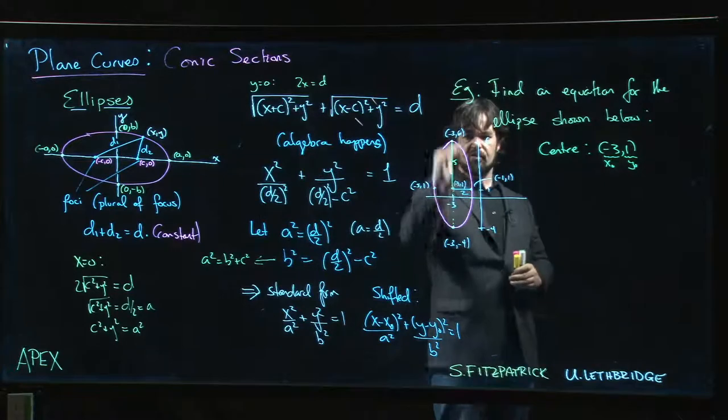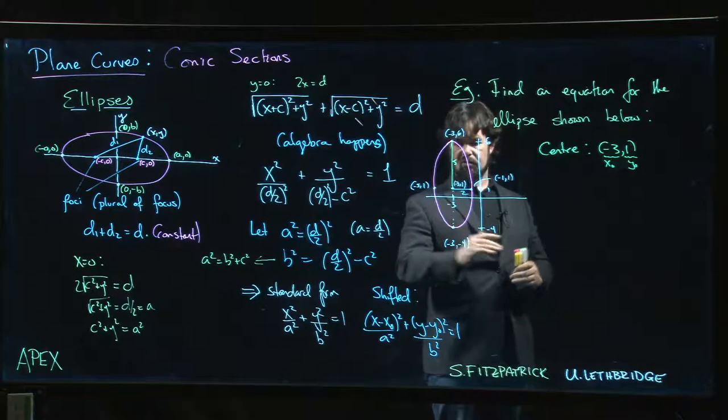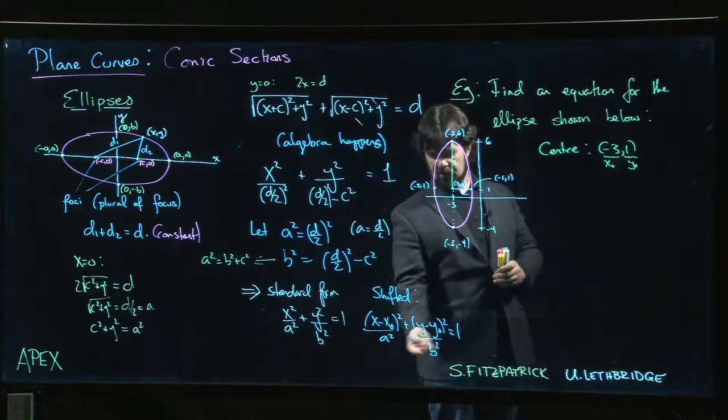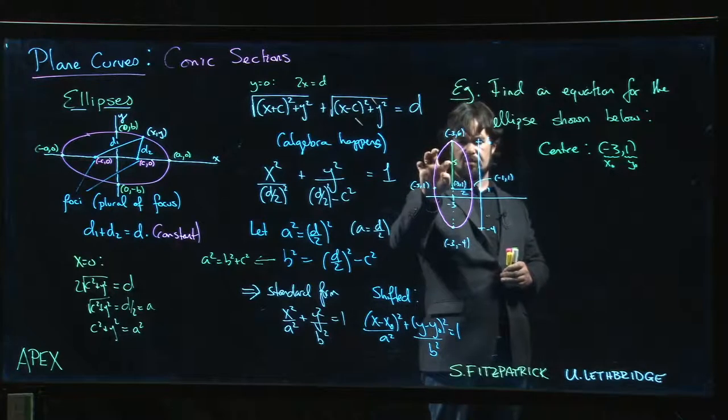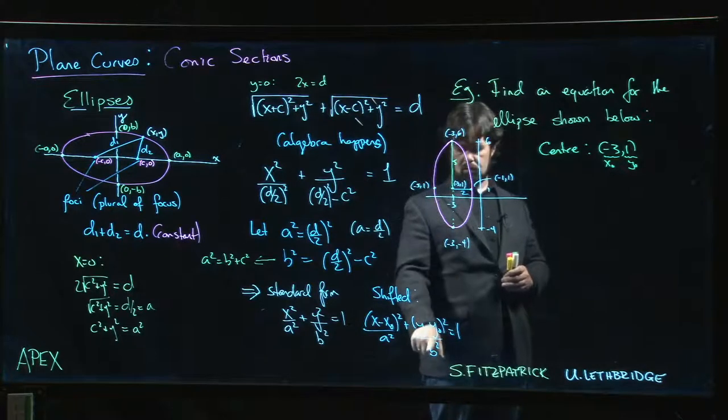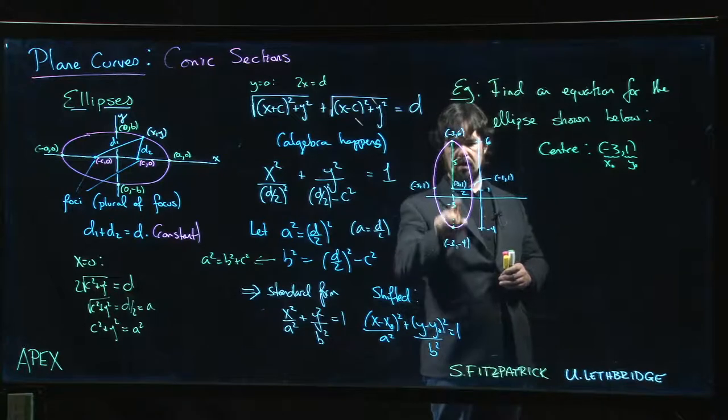But that just means we swap the positions for the a and the b. So 5 is basically going to be the coefficient for y, the 2 is going to give me the coefficient for x.